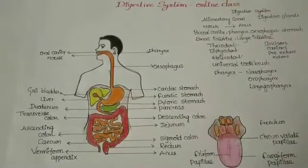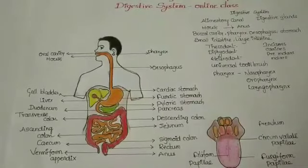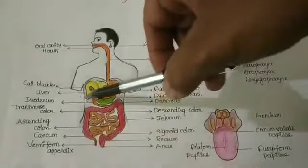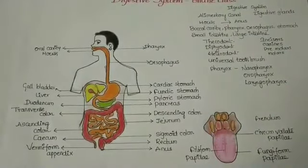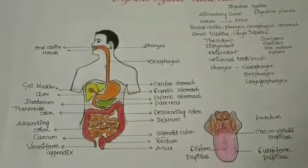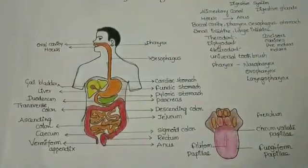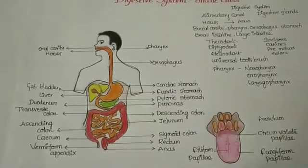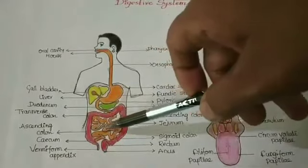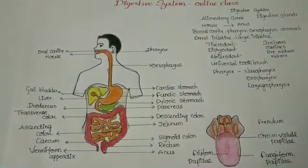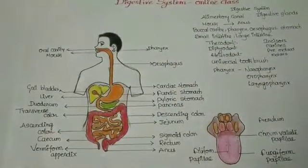The small intestine is the longer part of the alimentary canal, distinguished by three regions: the duodenum, jejunum, and ileum. The duodenum receives the hepatopancreatic duct from the liver and pancreas. The jejunum is the highly coiled middle region, and the posterior part of the small intestine is called the ileum. The small intestine leads into the large intestine.